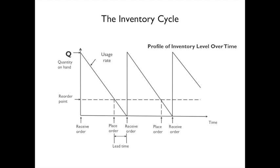Inventory cycle. On one axis is the quantity on hand, and here's your usage rate. You want your reorder point to account for how long it takes to receive the order — you want to place the order at the right time so the goods arrive right when you run out.